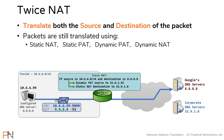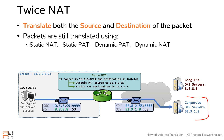You would do this by configuring a twice NAT that looked like this. You would say: if the source is 10.6.6.0/24 and the destination is 8.8.8.8, then translate the source using dynamic PAT to 32.8.2.55 and translate the destination to 32.9.1.8 — your corporate DNS server. That would have the effect of translating and redirecting that packet to your corporate DNS servers.